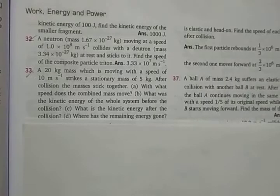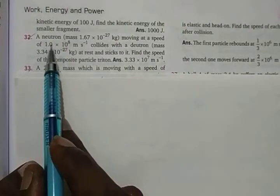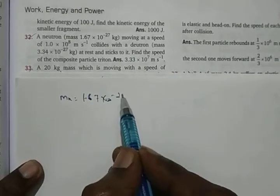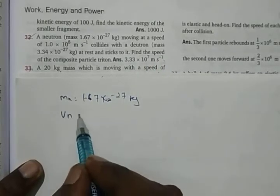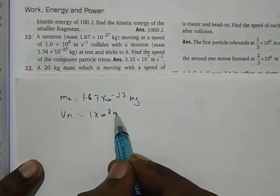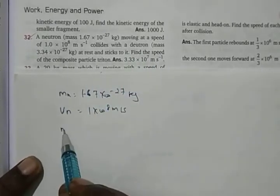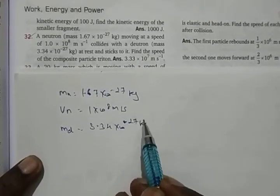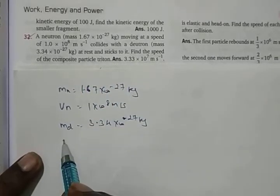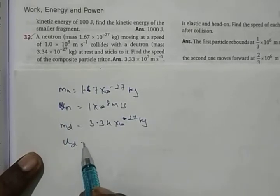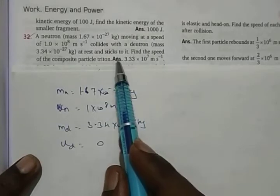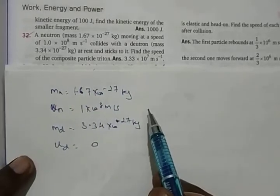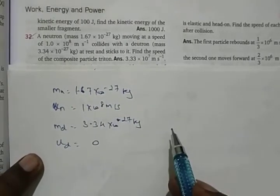We will go to question number 32. A neutron of mass 1.67×10⁻²⁷ kg moving at a velocity of 1×10⁸ m/s collides with a deuteron of mass 3.34×10⁻²⁷ kg at rest. It sticks to the deuteron. Find the speed of the composite particle — the triton.